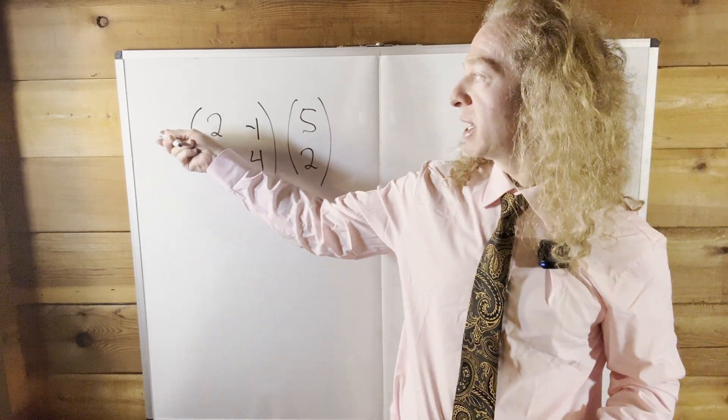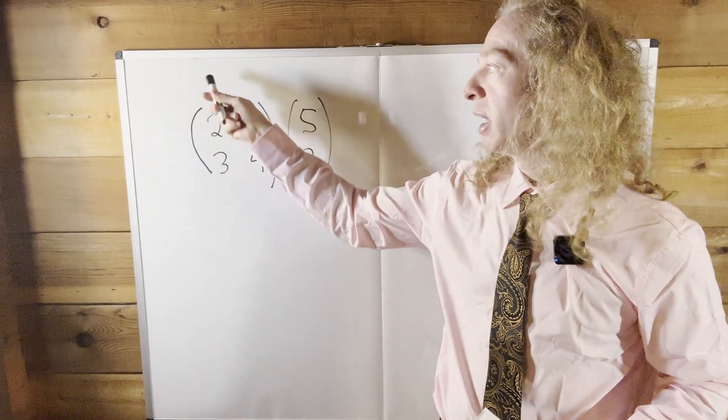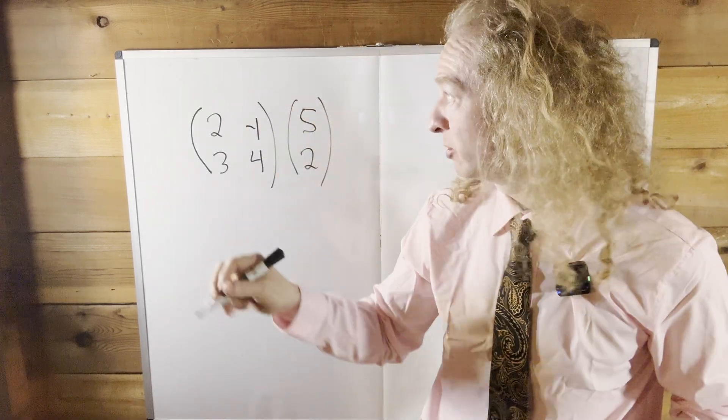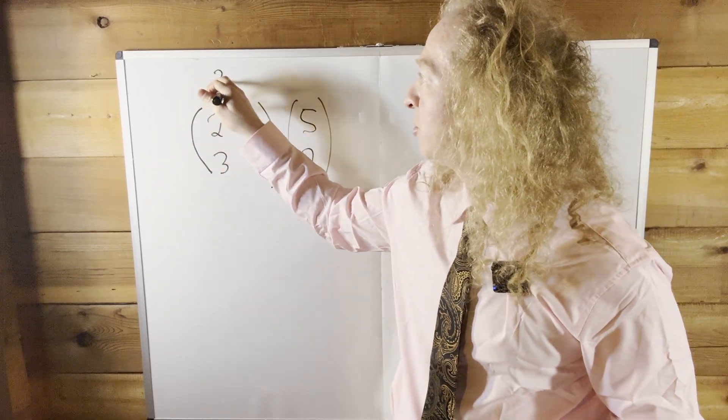So for this first matrix here, this has one, two rows, and one, two columns. So the dimension is going to be two by two, so I'm going to write it up here, two by two.